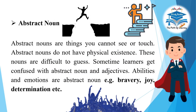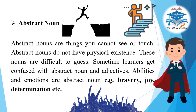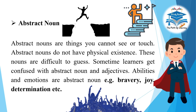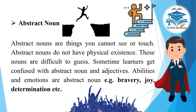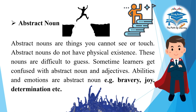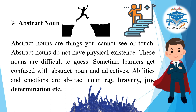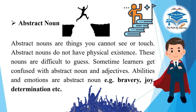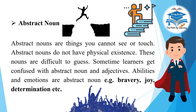Abstract noun: Abstract nouns are things you cannot see or touch. Abstract nouns do not have physical existence. These nouns are difficult to identify, and sometimes learners get confused between abstract nouns and adjectives. Abilities and emotions are abstract nouns — for example: bravery, joy, determination, etc.